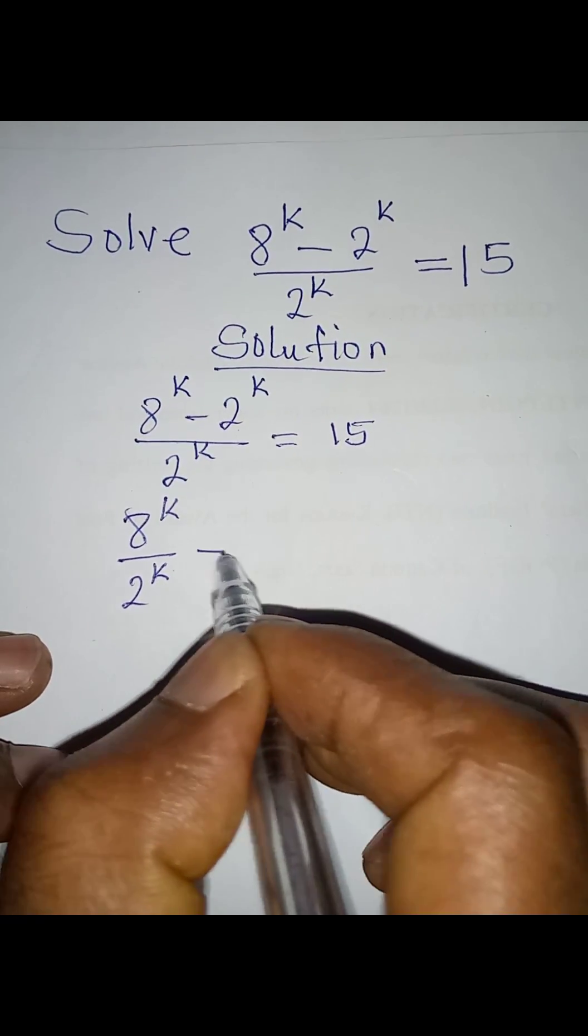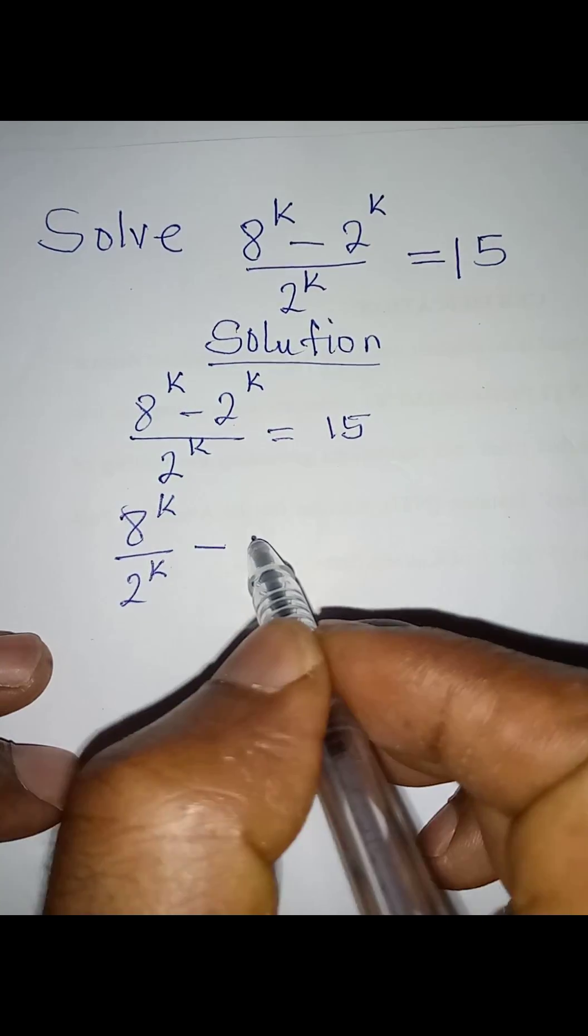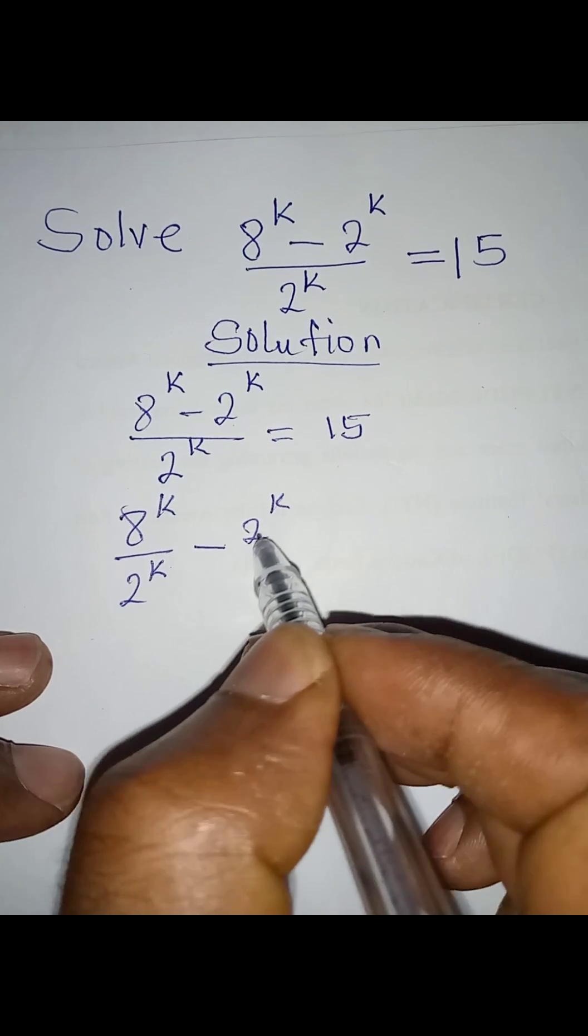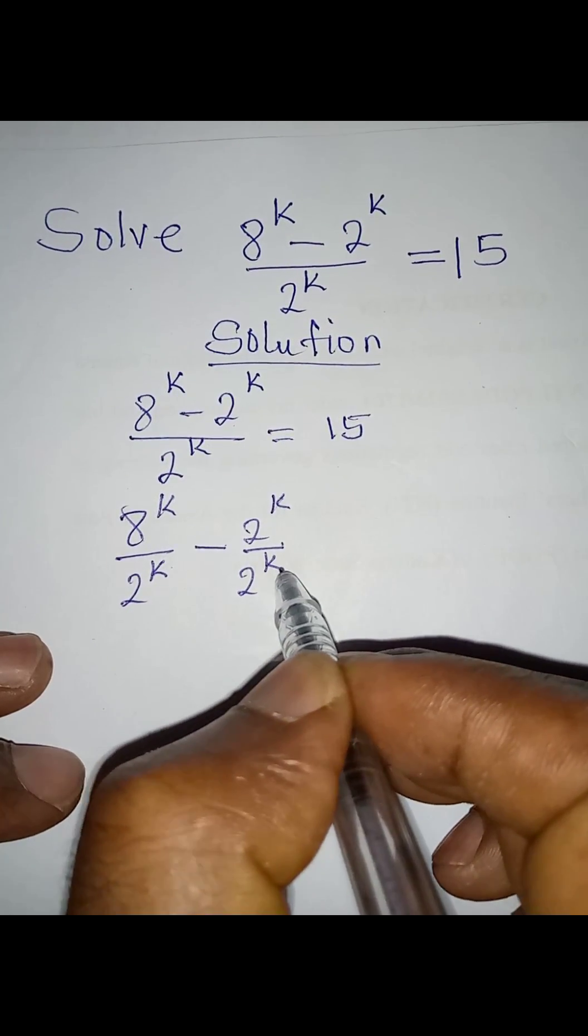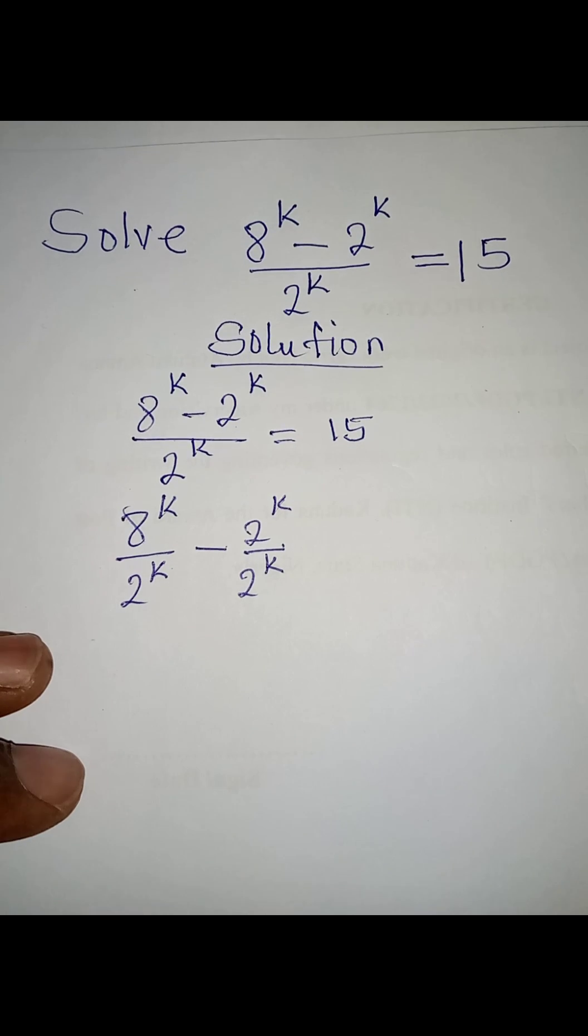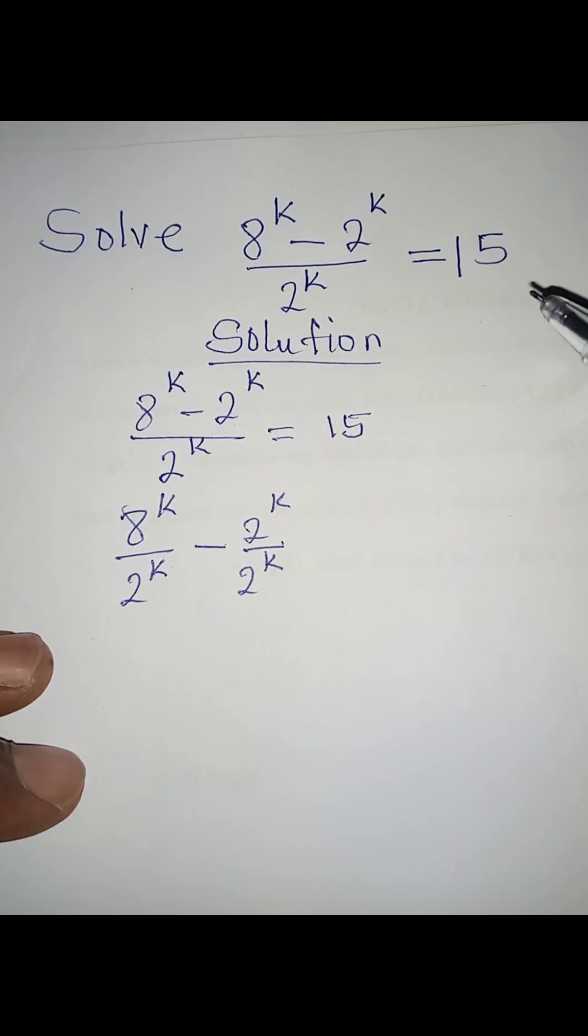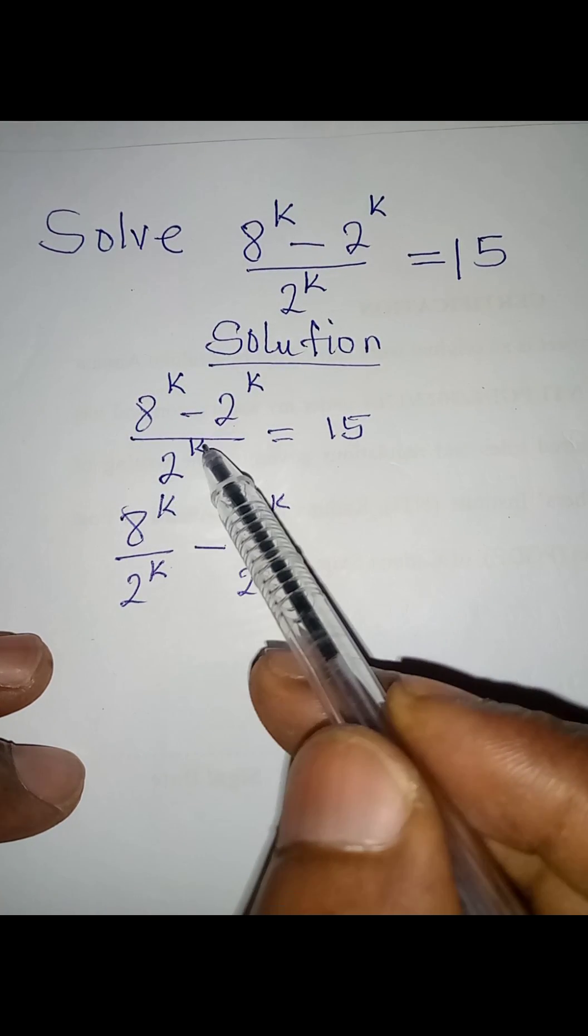Then minus here, I'm going to have 2 to the power k all over 2 to the power k. Remember we have not changed anything, what we have done is to split it.